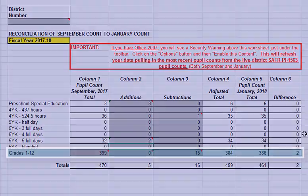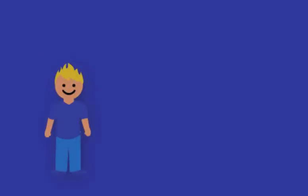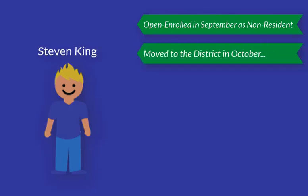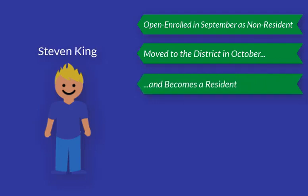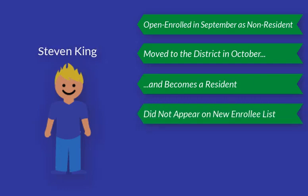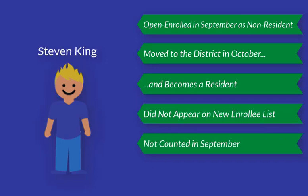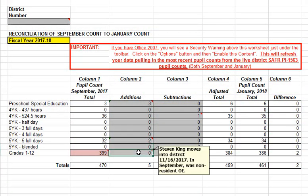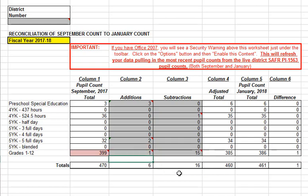In the grades 1 to 12 category, I find out that there's a 6th grade student — let's call him Stephen King. He was open enrollment in September, which means he was a non-resident in September, and he moved into the district sometime after the September count, becoming a resident. This is tricky because he was enrolled all along — he wouldn't have appeared on the new enrollee list. He would not have been counted in September, but he would have been in January. So by entering a 1 in the additions column in grades 1 to 12, I can capture his reconciliation difference.